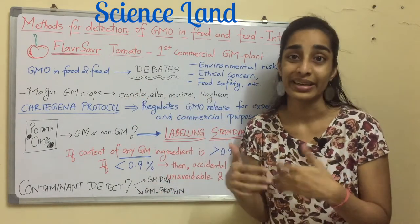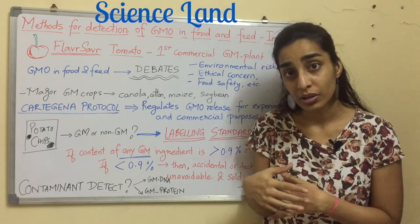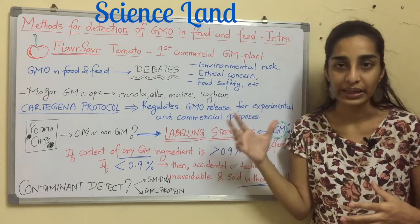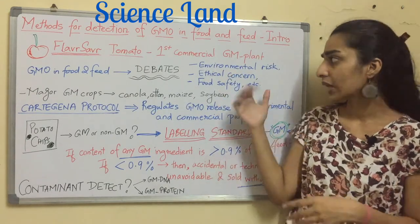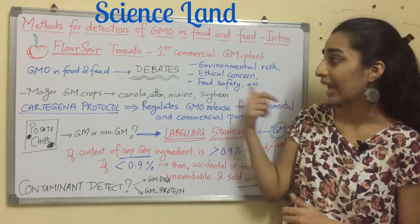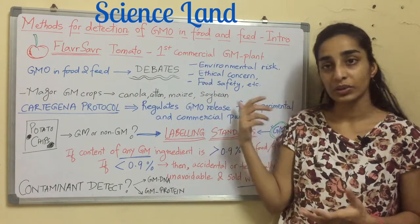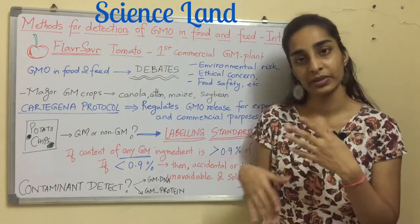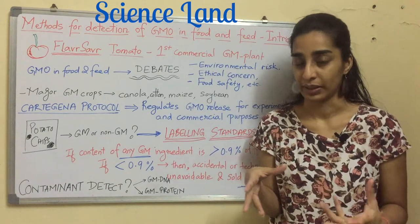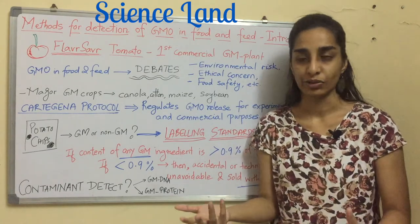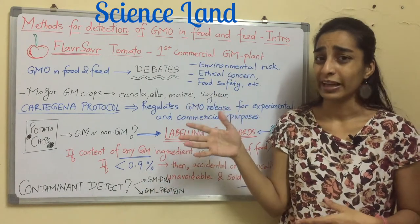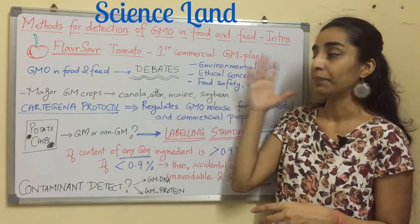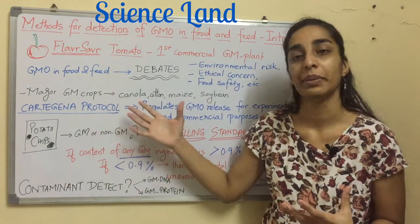Whether there should be any genetic modification in food is a controversial topic. There are so many aspects involved: environmental risk, ethical concerns, and food safety. Apart from these three, there are also political, social, and scientific aspects. The entire topic is very contentious — whether GMOs should be present in food and feed or not.